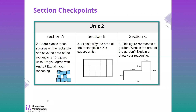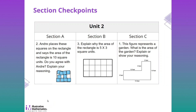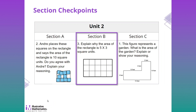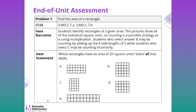The section checkpoints occur across the unit. There are examples for sections A, B, and C. These are like extended cool-downs and have anywhere from two to four items. The end-of-unit assessments have anywhere from four to eight different items. Here is an example of one of the items from the end-of-unit assessment related to the lesson we looked at earlier.